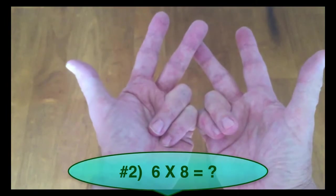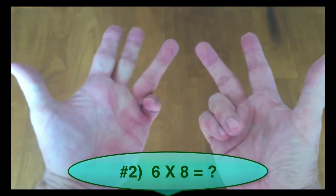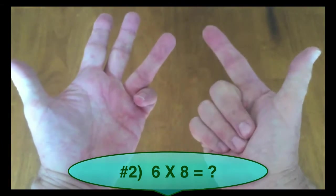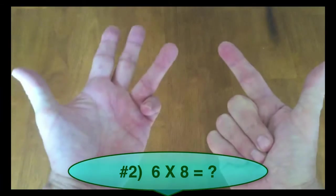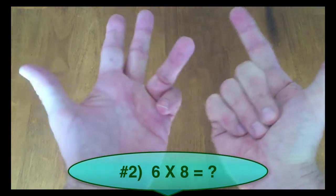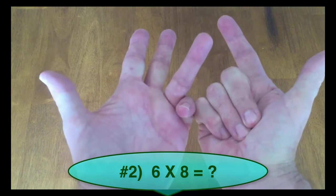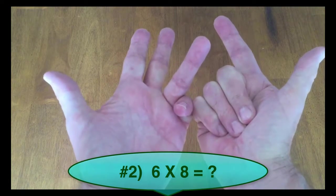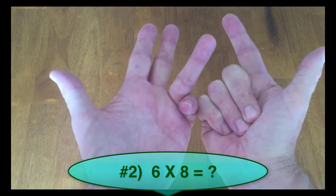As the next example, let's do 6 times 8. So we'd represent 6 with one finger down here and 3 fingers down here. That's 6 on my left hand and 8 represented on my right hand. Again, we put our hands together, add up the number of fingers that are down. That's 4. 4 times 10 again is 40.